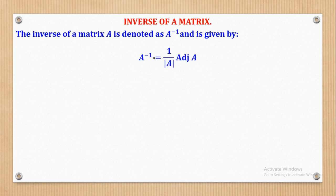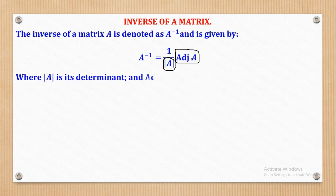The inverse is given by the formula: 1 over the magnitude of A — remember this symbol means determinant, so magnitude of a matrix is the determinant of that matrix — multiplied by the adjoint of that very matrix. We have already seen how to get the determinant in the previous video, so we shall now see how to get the adjoint of the matrix, and after that, how to get the inverse.